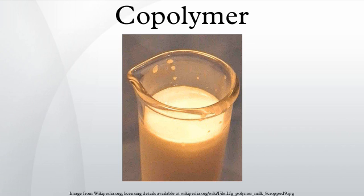A special kind of copolymer is called a block copolymer. Block copolymers are made up of blocks of different polymerized monomers. For example, PS-b-PMMA is short for polystyrene-b-poly(methyl methacrylate), and is usually made by first polymerizing styrene, and then subsequently polymerizing MMA from the reactive end of the polystyrene chains. This polymer is a diblock copolymer because it contains two different chemical blocks.